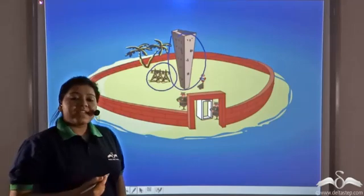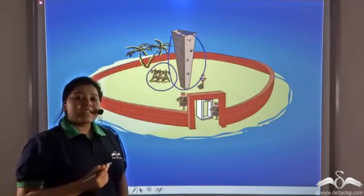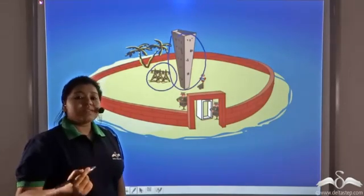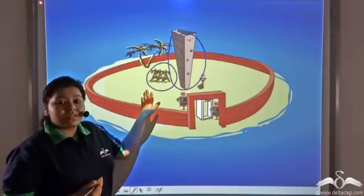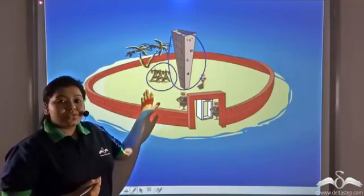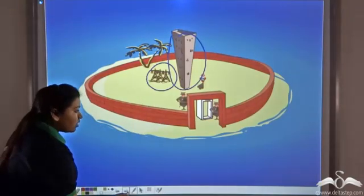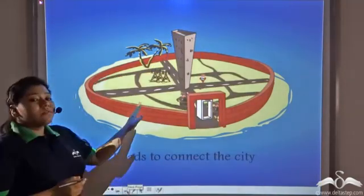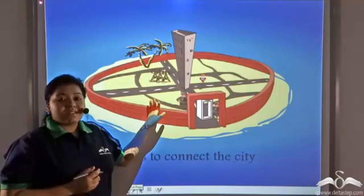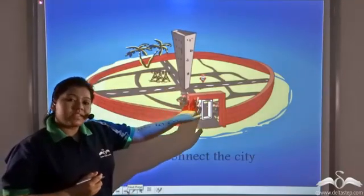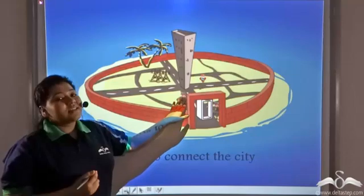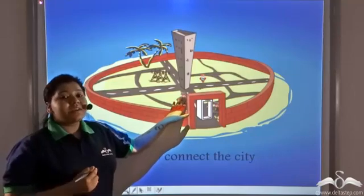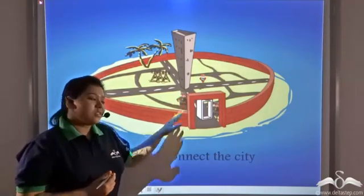But he was finding it very difficult to access various parts of the city because there were no roads. So he immediately ordered workers to build roads in the city. Now that roads were built, there was better connectivity and the mayor's problem was solved.